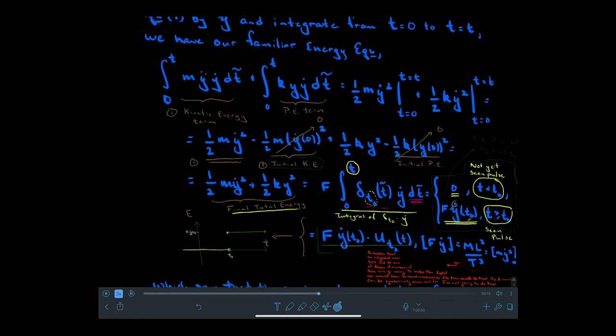We notice over here that because of the initialized state, there was no initial kinetic energy. The Dirac function is basically providing kinetic energy to the system at time t0, and that's what the delta is doing.